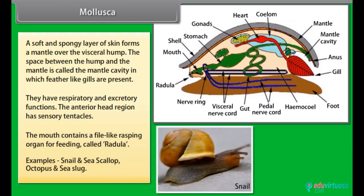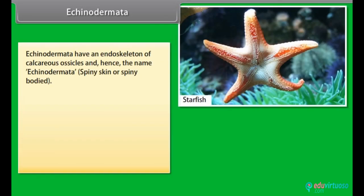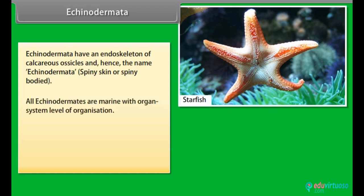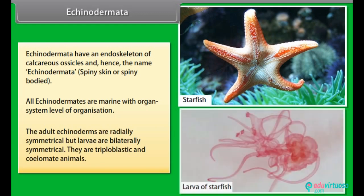Examples: Snail, Sea Scallop, Octopus and Sea Slug. Echinodermata have an endoskeleton of calcareous ossicles and hence the name Echinodermata, which means spiny skin or spiny bodied. All echinodermates are marine with organ system level of organization. The adult echinodermates are radially symmetrical, but larvae are bilaterally symmetrical. They are triploblastic and coelomate animals.